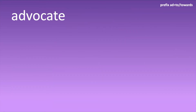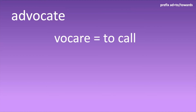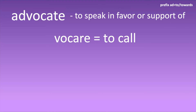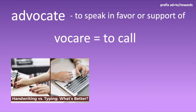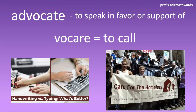Next we have 'advocate' as a verb. It comes from 'vocare,' meaning to call. So this is to speak in favor of or support something. It can also be pronounced 'advocate' as a noun — if you are an advocate, you advocate for something. This can be just an idea, like a teacher advocating for handwritten notes versus typed notes, or you can advocate for a larger cause, such as advocating for the homeless.